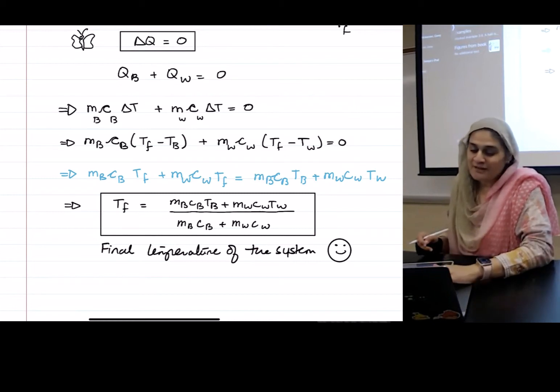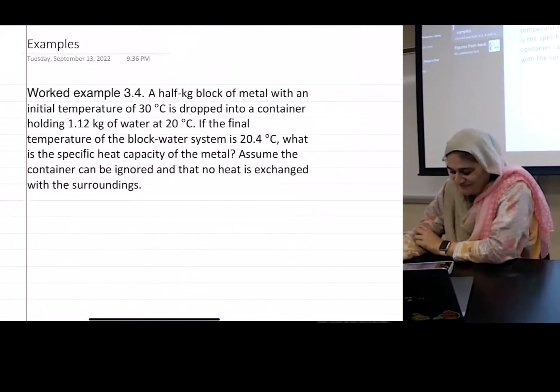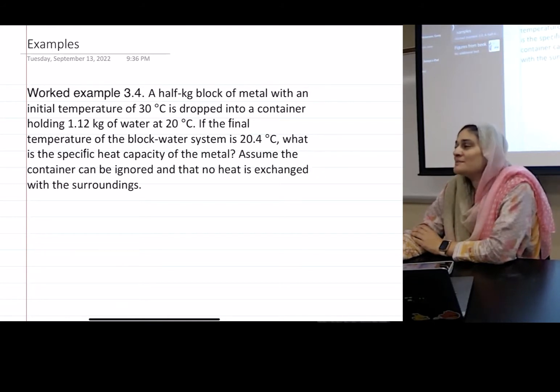Right, okay, so now let's do an example. A half kilogram block of metal with an initial temperature of 30 degrees Celsius is dropped into a container holding 1.12 kilograms of water at 20 degrees Celsius. If the final temperature of the block water system is 20.4 degrees Celsius, what is the specific heat capacity of the metal? Assume the container can be ignored and that no heat is exchanged with the surroundings.